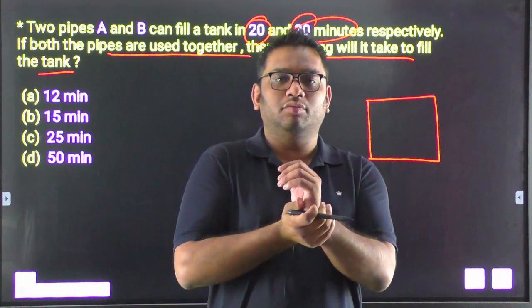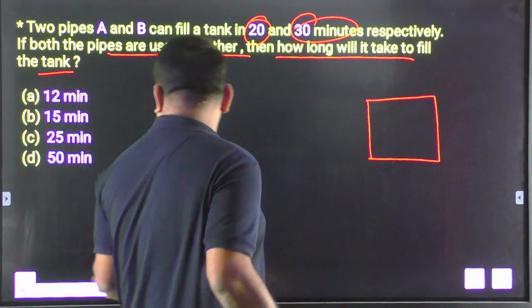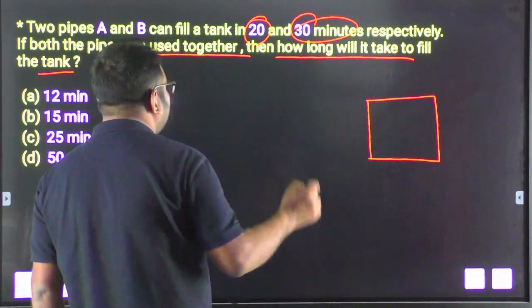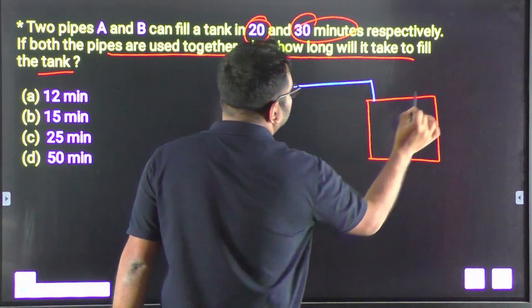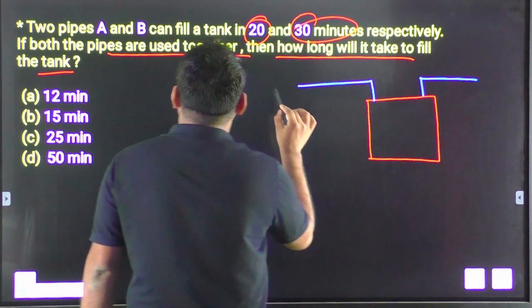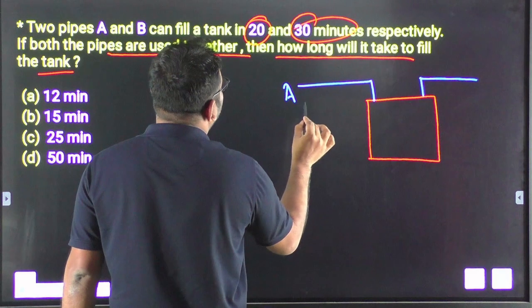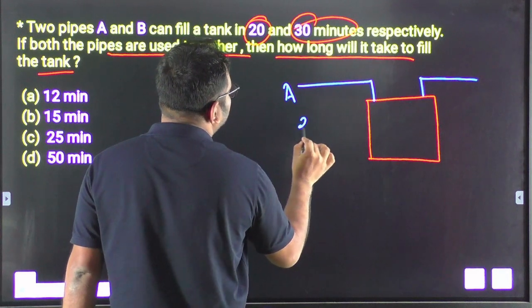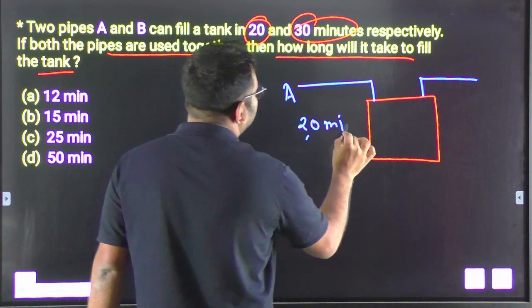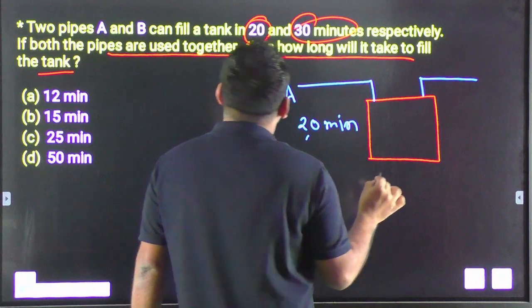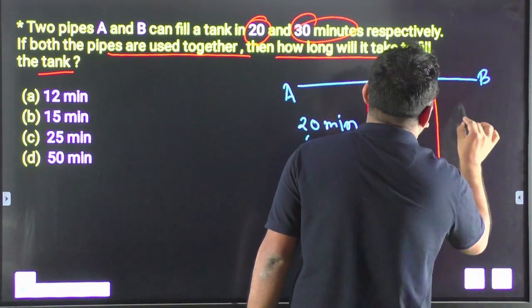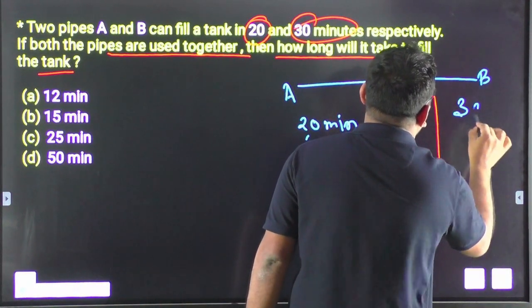Next question: a tank is to be filled. Pipe A fills the tank in 20 minutes and Pipe B fills it in 30 minutes.